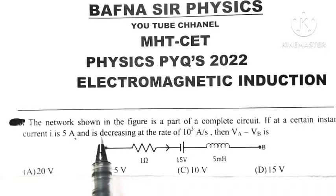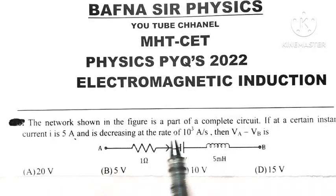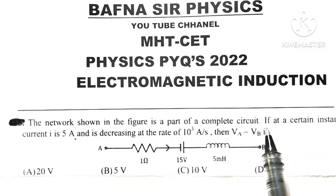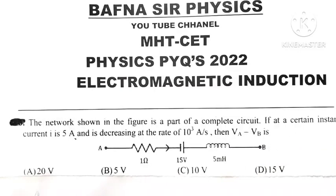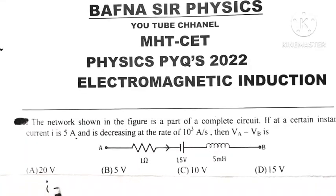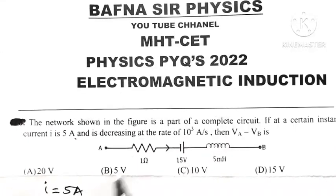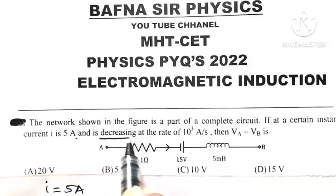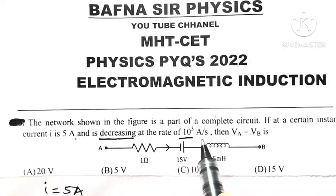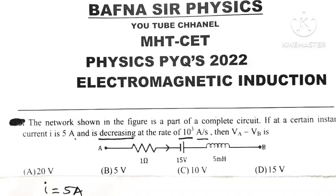The network shown in the figure is a part of complete circuit. If at a certain instant, the current I is 5 ampere and is decreasing at the rate of 10³ ampere per second.